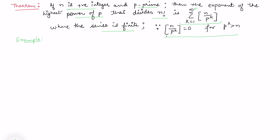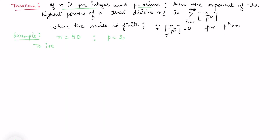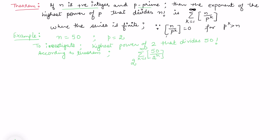Let's consider an example before we move to the proof. Take n equal to 50 and p equal to 2. We want to investigate the highest power of 2 that divides 50 factorial. According to the theorem, we need 2 to the power of the summation from k equals 1 to infinity of the greatest integer of 50 over 2 to the power k. Let's open this summation formula: this equals the greatest integer of 50 over 2 to the power k for each k.